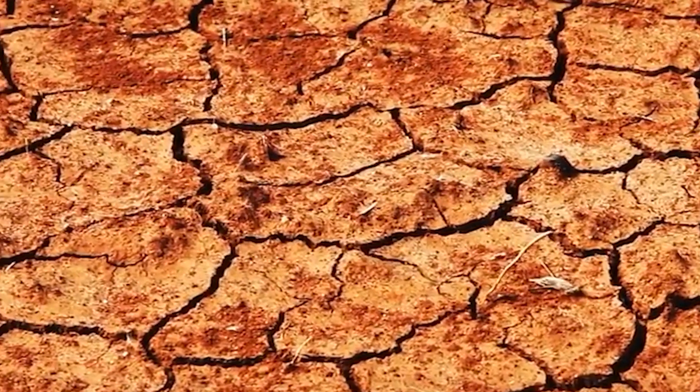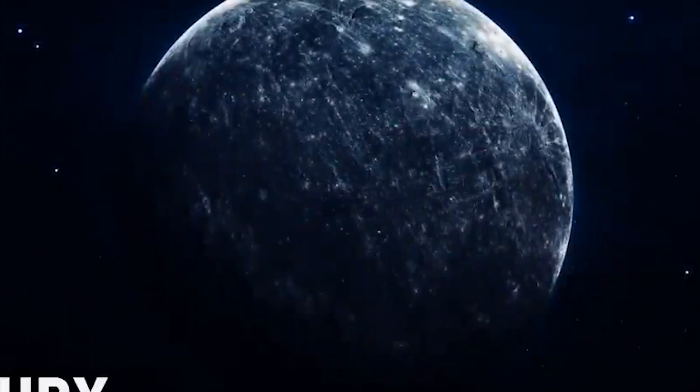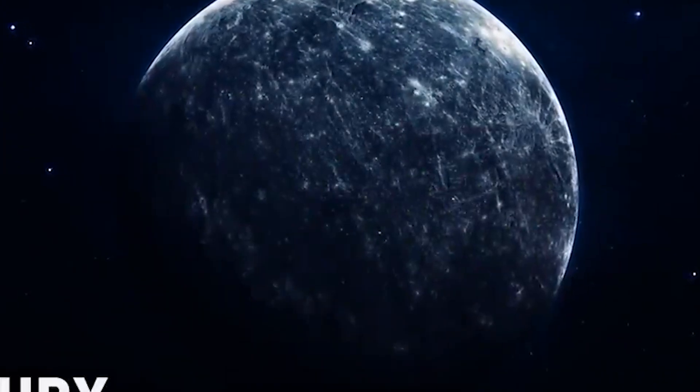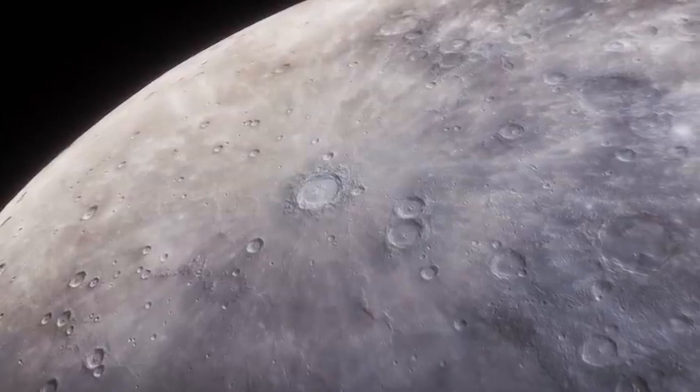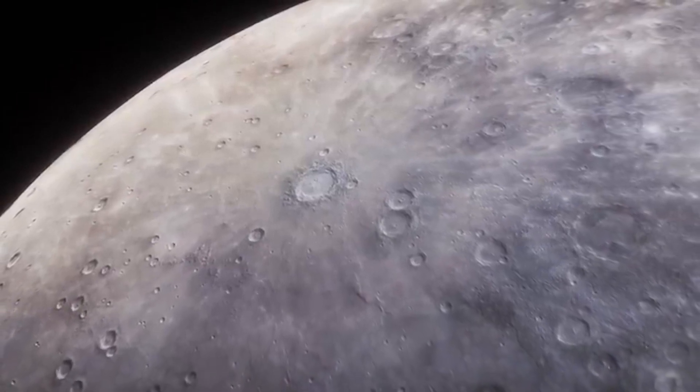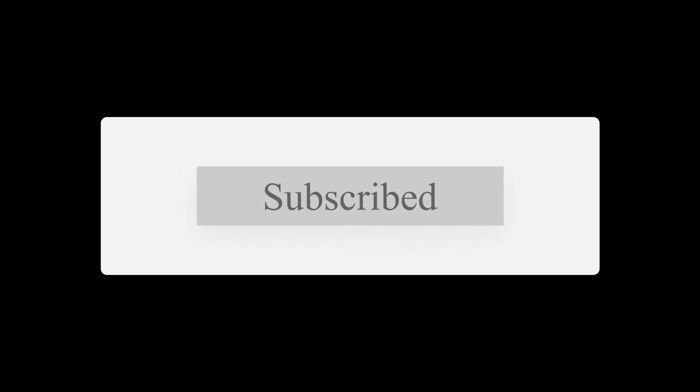Extreme conditions prevail on the lava planet K2-141b, which features a magma ocean, an atmosphere composed of rock vapor, and supersonic winds. Let us know your thoughts in the comment section. Learning about space always feels like using a magnifying glass to search a field, and there is always something interesting you might find. So do make sure that you are subscribed to make sure that we are always connected. Thank you for watching.